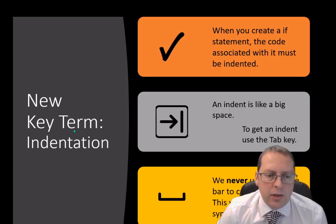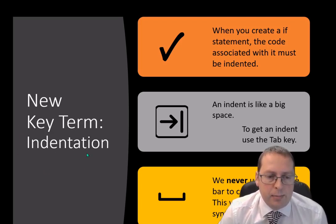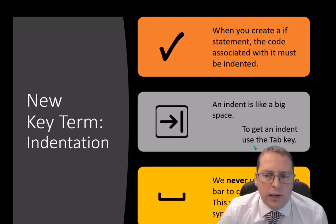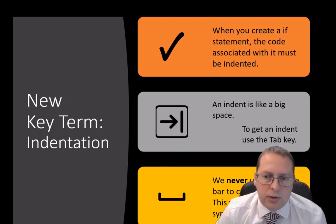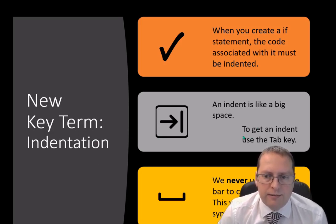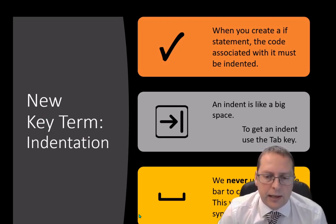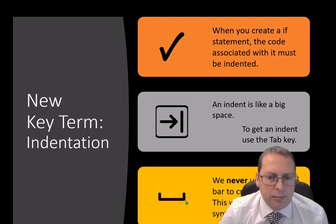The new term today is indentation — an indentation means a space or gap, like moving something along. The tab key, next to the letter Q, will indent text. In REPL some indentation is done automatically, but if you see a gap and you're copying it, never use the space bar — always use the tab key for indentation.